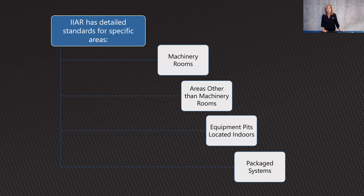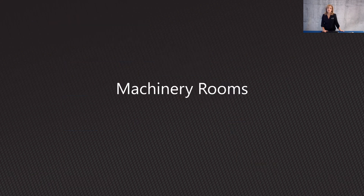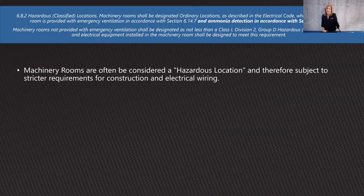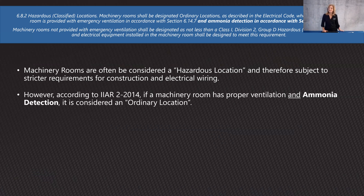IIAR has standards for specific areas: your machinery rooms, areas other than machinery rooms, equipment pits located indoors, and package systems — all with different rules. Machinery rooms have the strictest standards because that's where most of your ammonia is located, covered under section 6.8.2. Your machinery room can be classified as a hazardous location or an ordinary location. You really want ordinary, because hazardous classification involves additional requirements around electrical wiring and construction. To qualify as ordinary, your machinery room must have proper ventilation and ammonia detection.